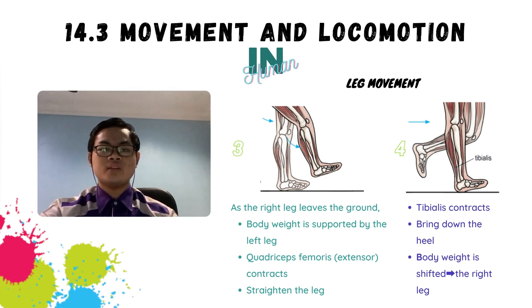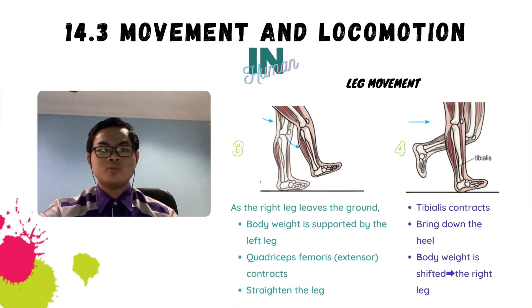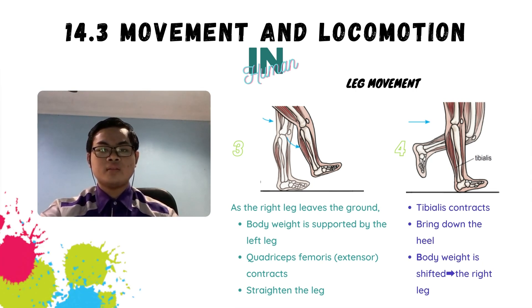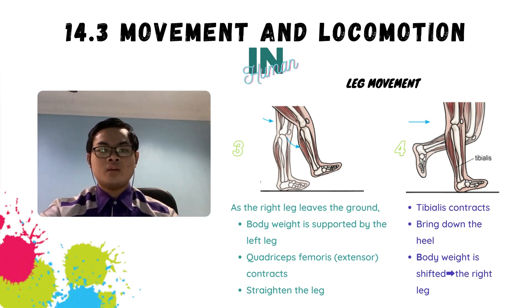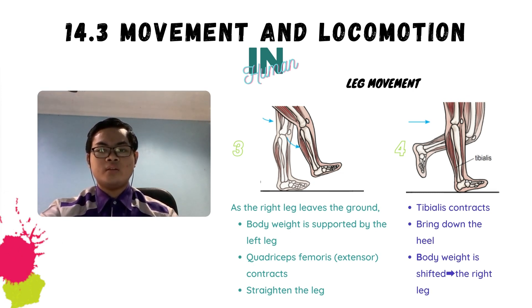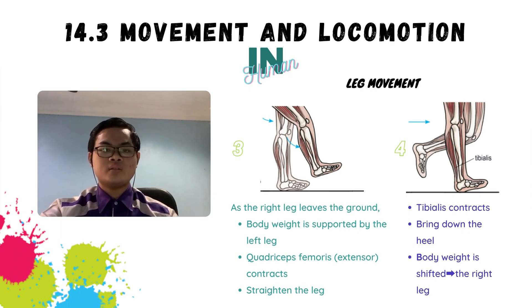The quadriceps femoris contracts to straighten the leg. After that, the tibialis contracts to bring down the heel. As the right heel touches the ground, body weight is now shifted to the right leg. This whole sequence is then repeated by the left leg.